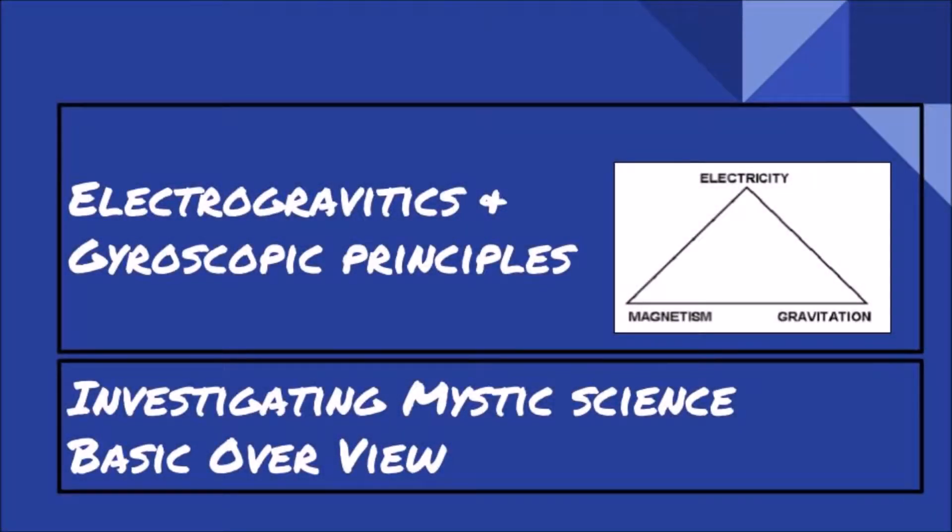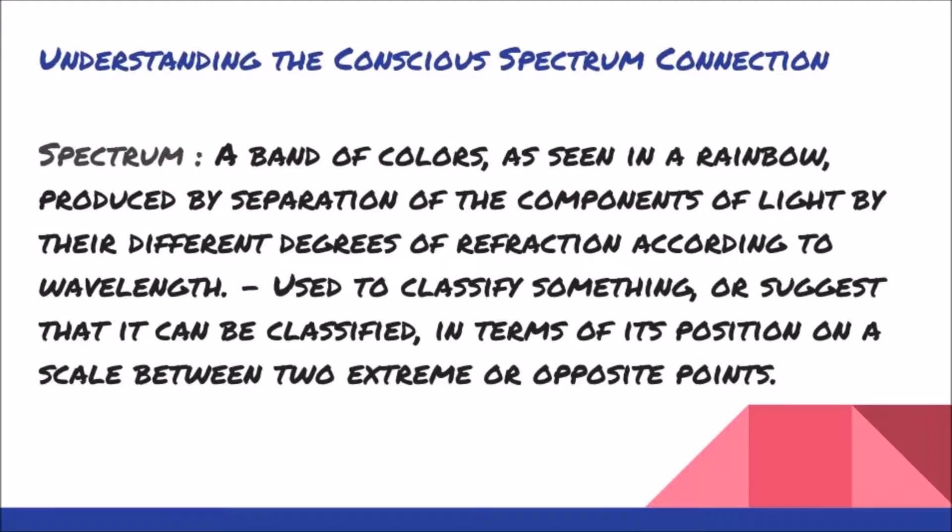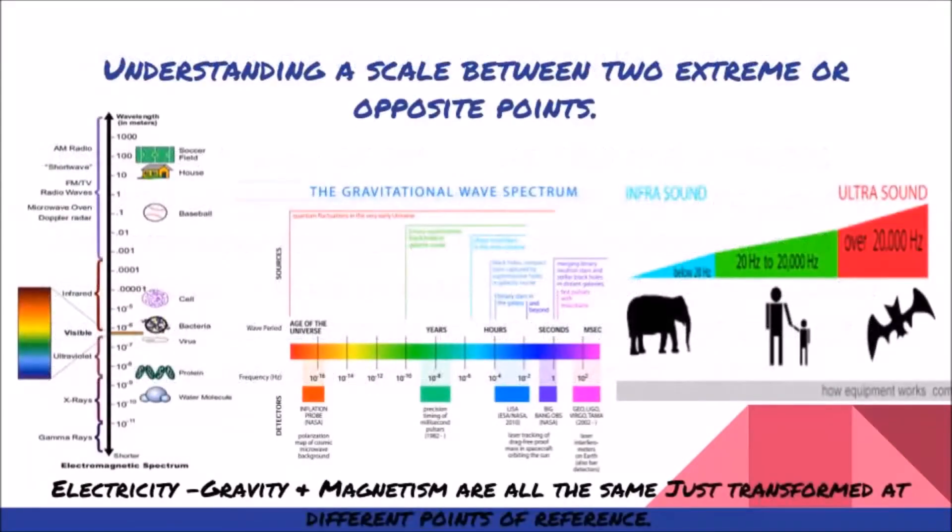Electrogravitics and Gyroscopic Principles: Investigating Mystic Science and Basic Overview. Understanding the Conscious Spectrum Connection. Spectrum: A band of colors as seen in a rainbow, produced by separation of the components of light by their different degrees of refraction according to wavelength. Used to classify something or suggest that it can be classified in terms of position on a scale between two extremes or opposites.